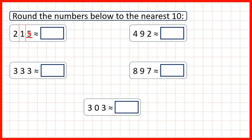We can see that we have five ones, and if we have five or more, we round up. Because we're rounding up, this one is going to become a two, because rounding up increases the place value we've circled by one. Digits to the left of what we've circled always stay the same, and digits to the right turn into zeros, so we get 220.